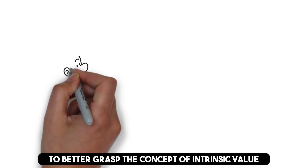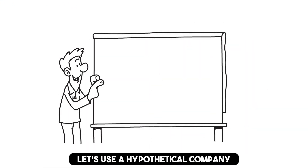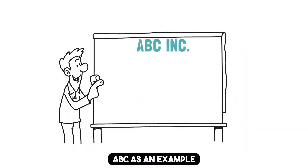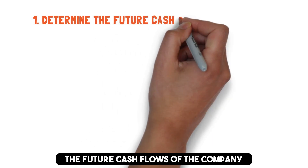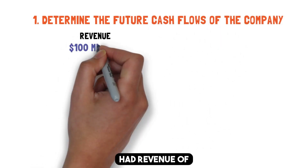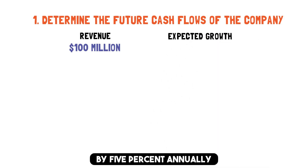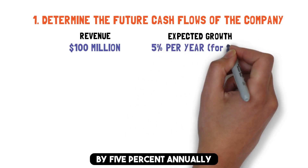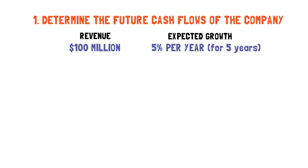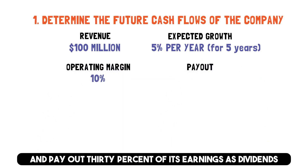To better grasp the concept of intrinsic value calculation and how it relates to investing strategy, let's use a hypothetical company, ABC, as an example. The first step is to determine the future cash flows of the company. Let's say ABC had revenue of $100 million in the past year and is expected to grow its revenue by 5% annually in the next five years. We expect ABC to have an operating margin of 10% and pay out 30% of its earnings as dividends.